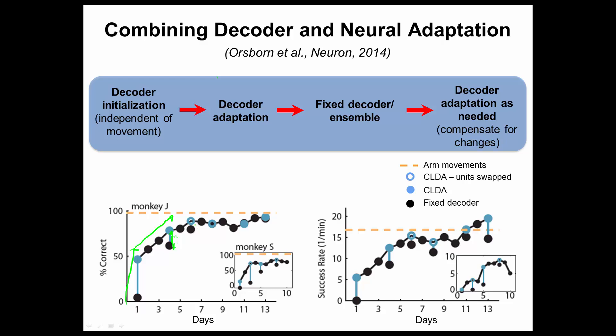Or if there is a loss of cells in the population, we will add new cells if we have them, or readapt the decoder with whatever cells we have left. The idea is that we will keep that cortical map through time and just be doing small touch-ups, or closed-loop refits, as needed. Our hope in writing this perspective piece is to encourage the field to systematically explore combining decoder and neural adaptation, as this may well increase performance, robustness, and generalization. Thank you, we hope you enjoy the paper.